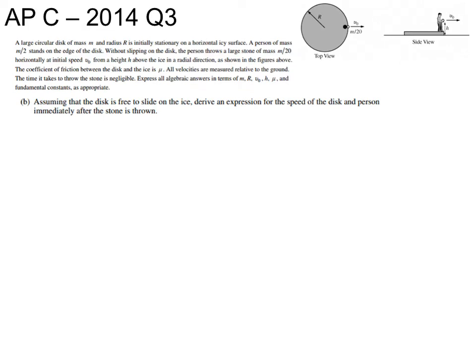Now it says that the disc is free to slide on the ice and they want us to derive an expression for the speed of the block and disc. Again, free to slide. Speed after the ball is thrown. This is a collision. So initial equals final total momentum.